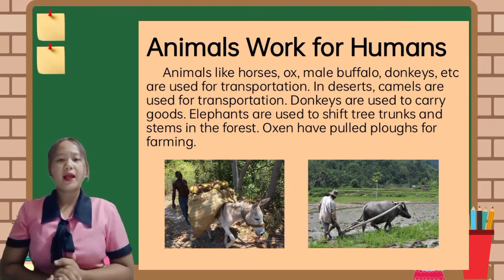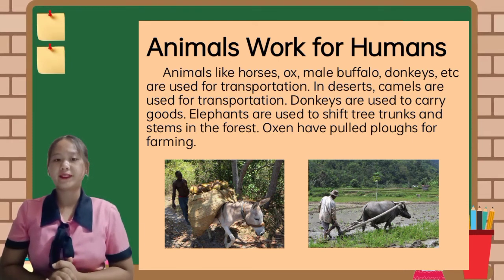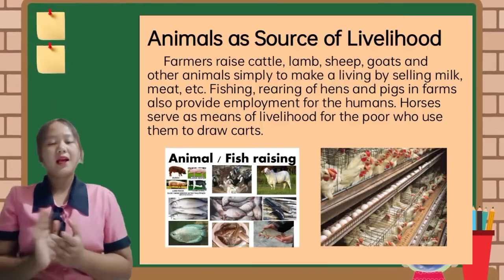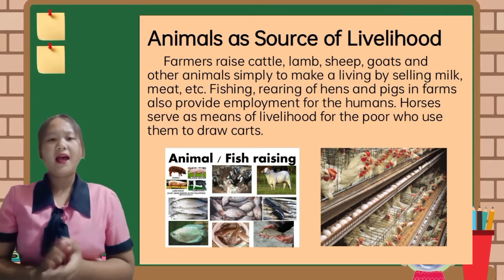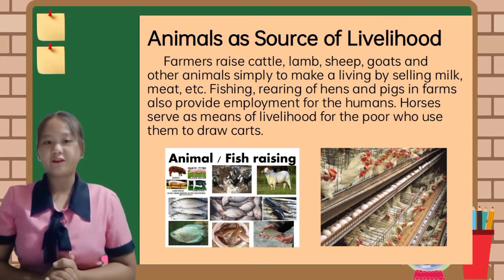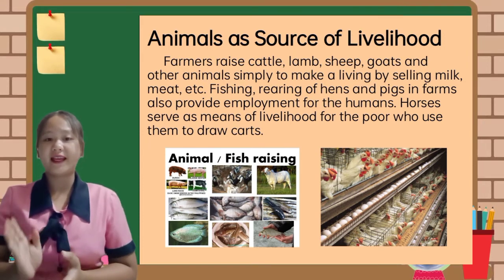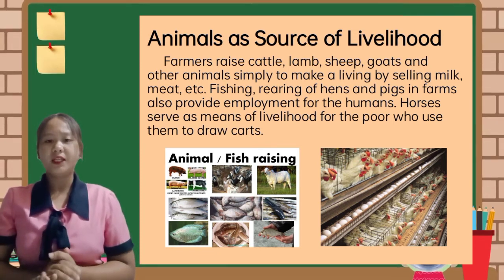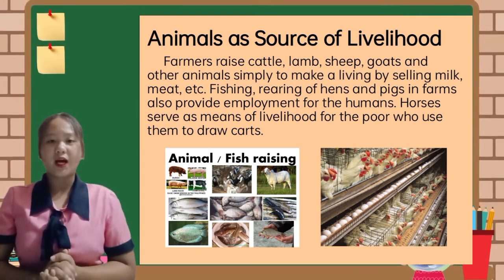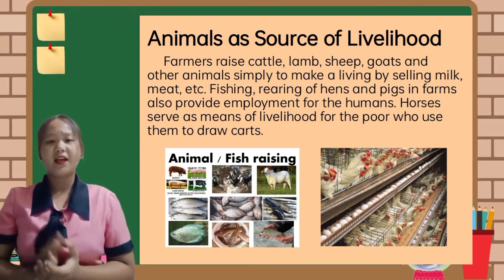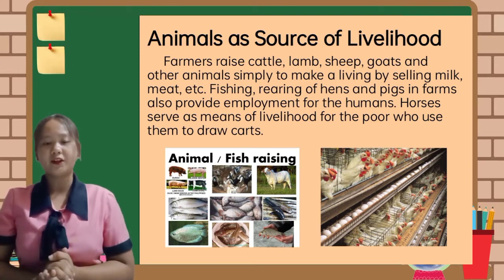Animals work for humans. There are animals that work for humans like carabaos that help farmers, horses as means of transportation, and others. Animals can also be a source of livelihood. For instance, if you have a chicken farm, you can use its eggs, chicken meat, or the chicken itself as your source of income. This also includes other animals such as pigs, cows, goats, fish, and others.